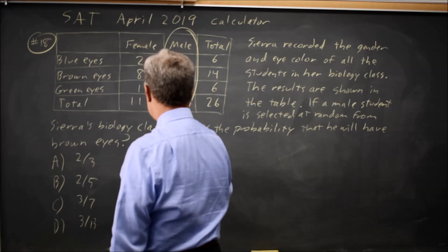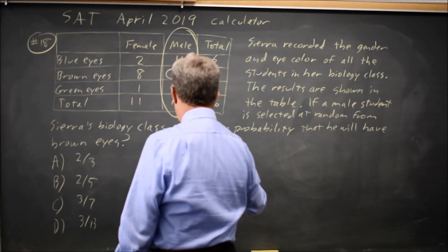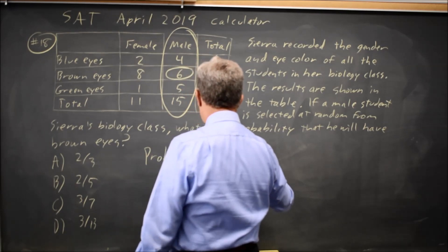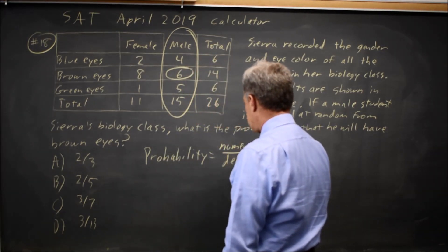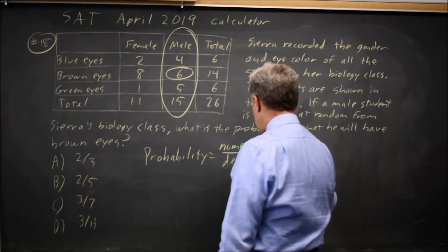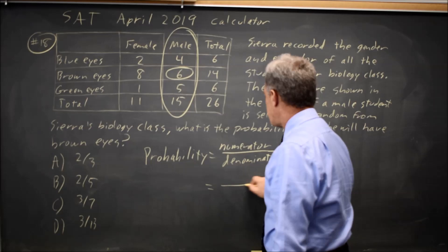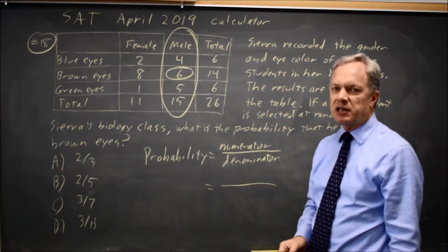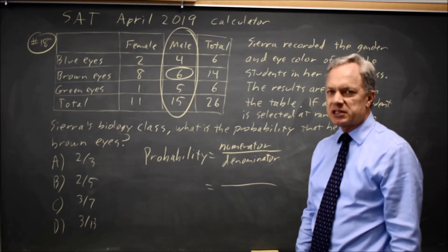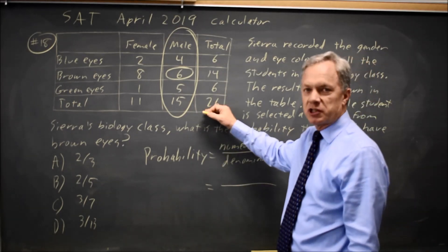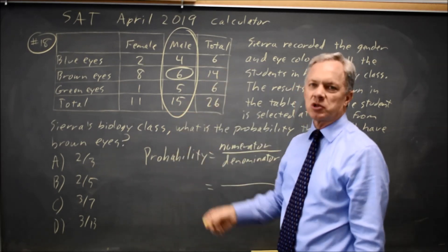To find a probability, I like to write it as a numerator over a denominator and I always find my denominator first. The denominator is all individuals that might have been chosen under the words of the question. On these questions for the SAT, the denominator might be the total for the table. It might be the total for one or more rows or one or more columns.